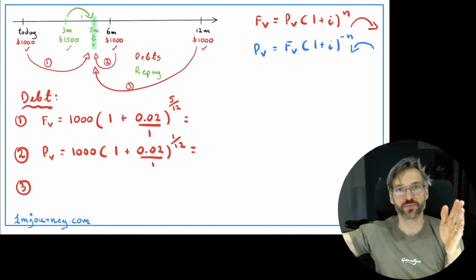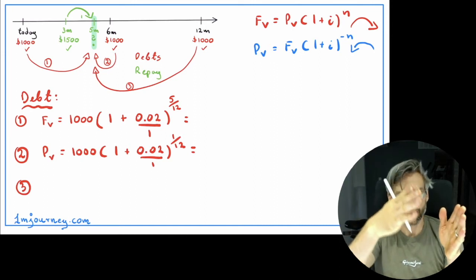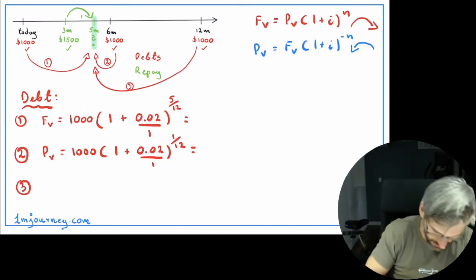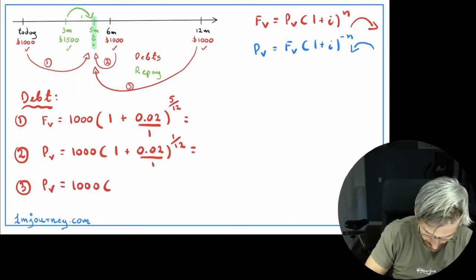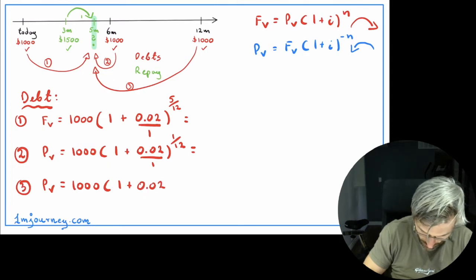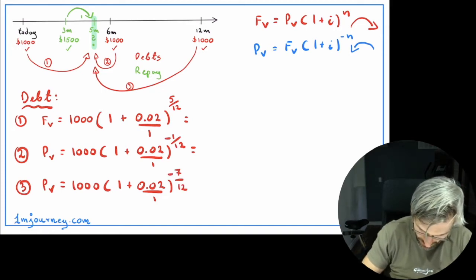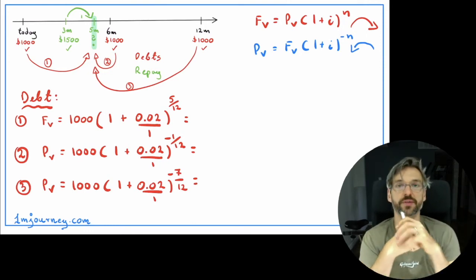Number three — from 12 months I'm going to bring it back to five months, so I'm bringing it back seven months. Present value equals $1,000 times (1 + 0.02 over 1) to the negative 7 over 12.